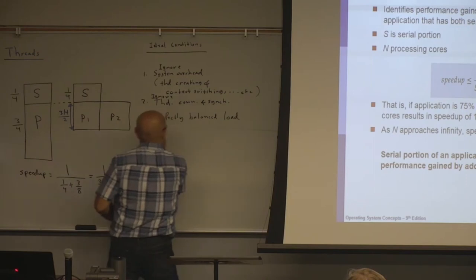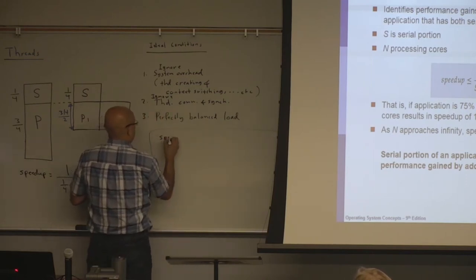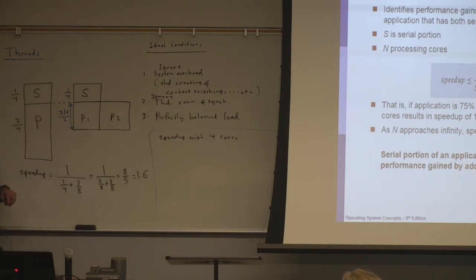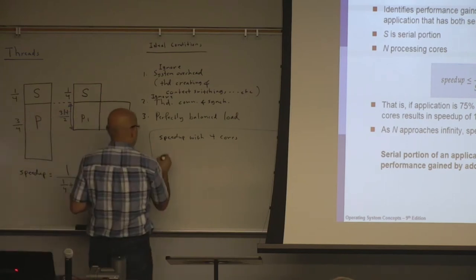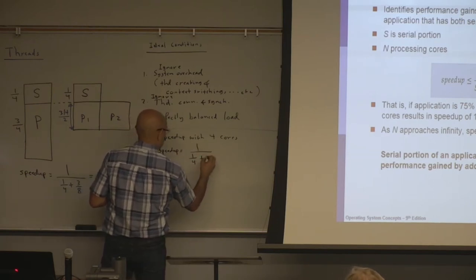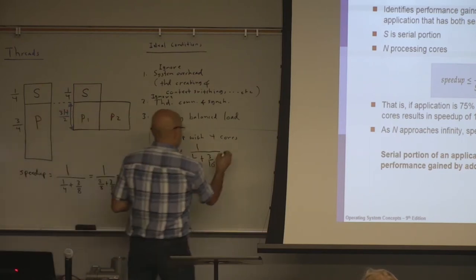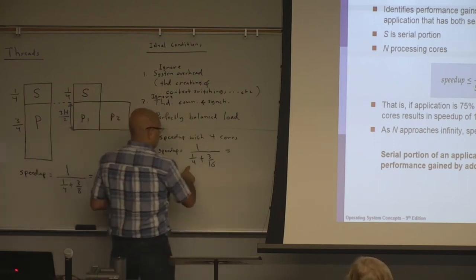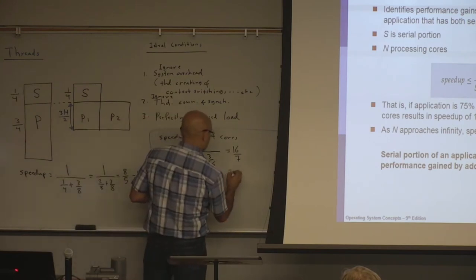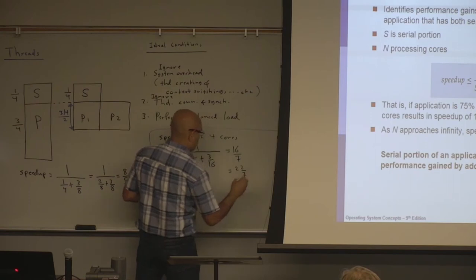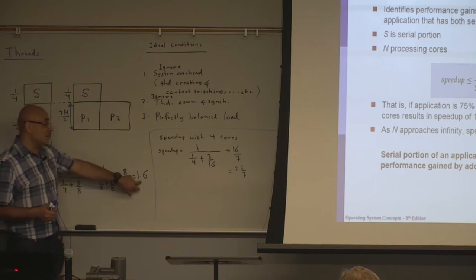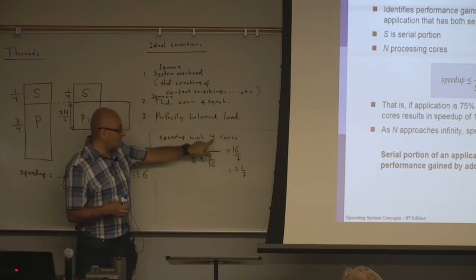Now what if we have speedup with four cores? Under the same ideal conditions, the speedup equals 1 divided by one quarter plus three sixteenths, which is 16 over 7 — about 2.3. So the maximum speedup with two cores is 1.6 instead of 2, and the maximum speedup with four cores is 2.3 instead of 4.